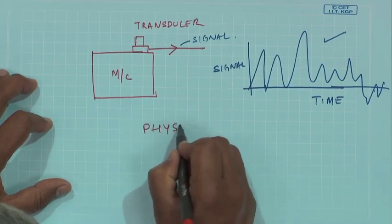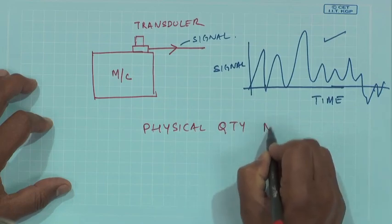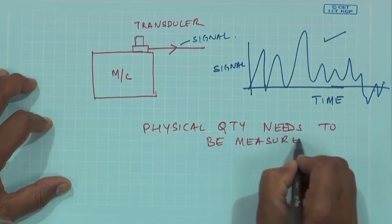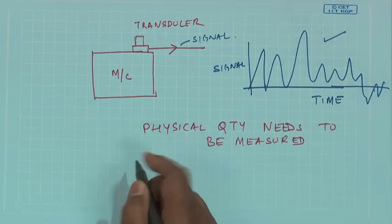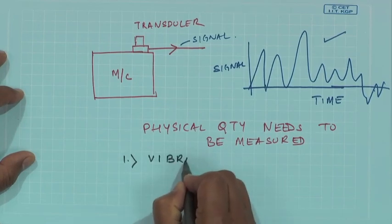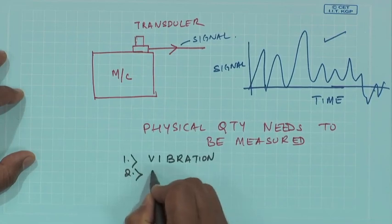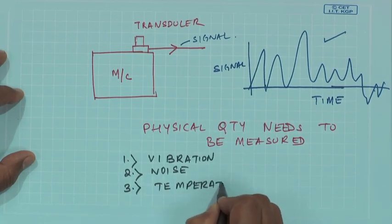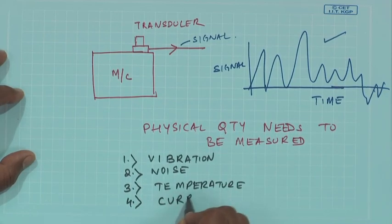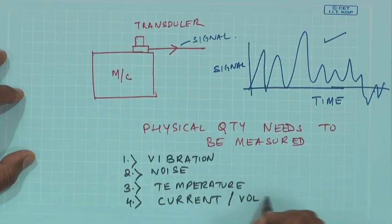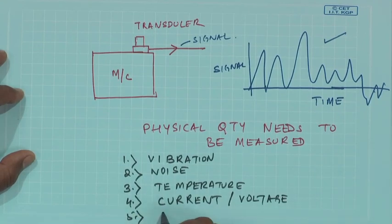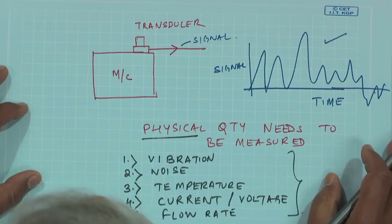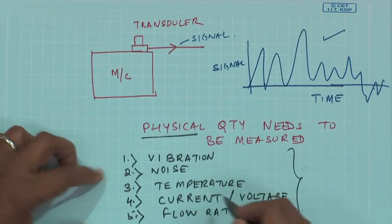A physical quantity needs to be measured. To recollect what are the physical quantities particularly in CBM: one could be the vibration of the machinery, could be noise, could be temperature, could be the electrical current or voltage, could be the flow rate, etcetera. These are the mechanical physical quantities which need to be measured, and there are transducers which can be used to measure these physical quantities.